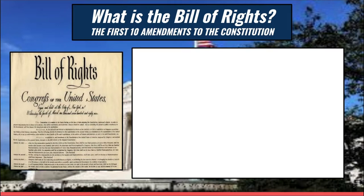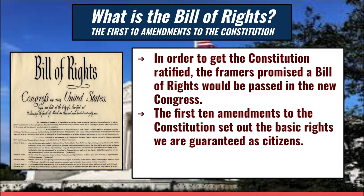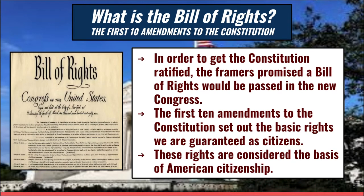The first 10 amendments to the Constitution are known as the Bill of Rights. In order to get the Constitution ratified, the framers promised a Bill of Rights would be passed in the new Congress. These amendments basically set out the rights we are all guaranteed as citizens. They are considered the basis of American citizenship, and you will often hear people refer to their rights in the Bill of Rights when discussing what rights we have as citizens.